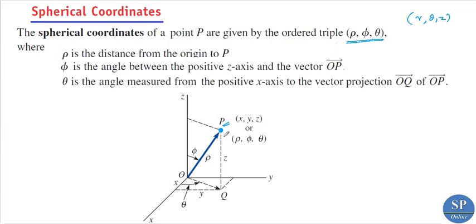Now, what is ρ here? ρ is actually the length or distance of this point from the origin. That is, ρ is the distance from the origin to the point P — it is the first coordinate. So if the point is here then the distance will be ρ.